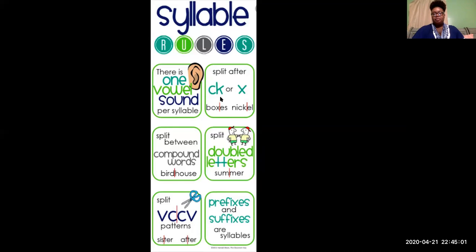You also split after CK. You split between compound words. So here we have birdhouse, and we're going to split between those two words. We have bird, we have house. Birdhouse. We have two syllables. Birdhouse.